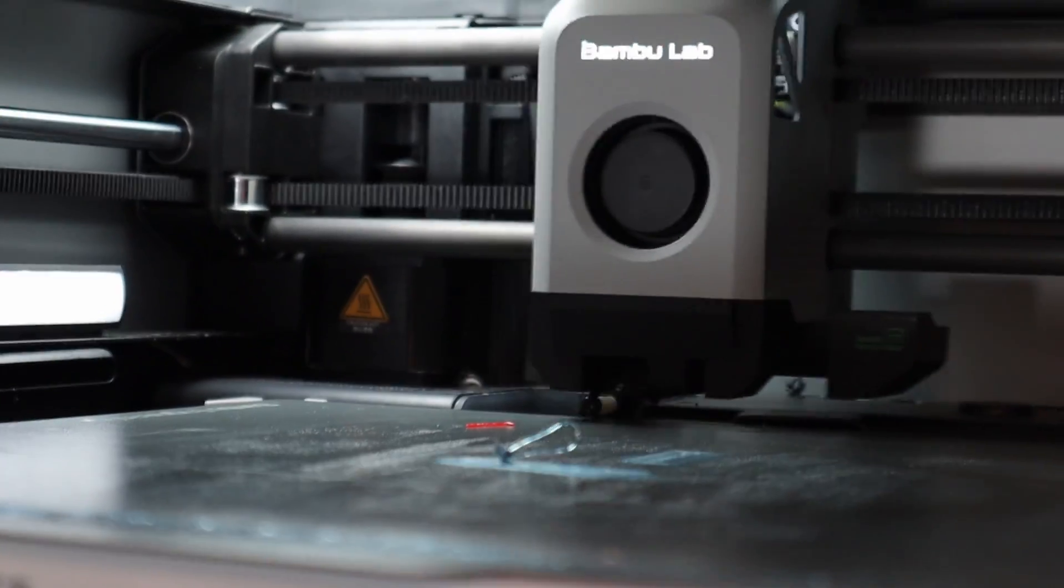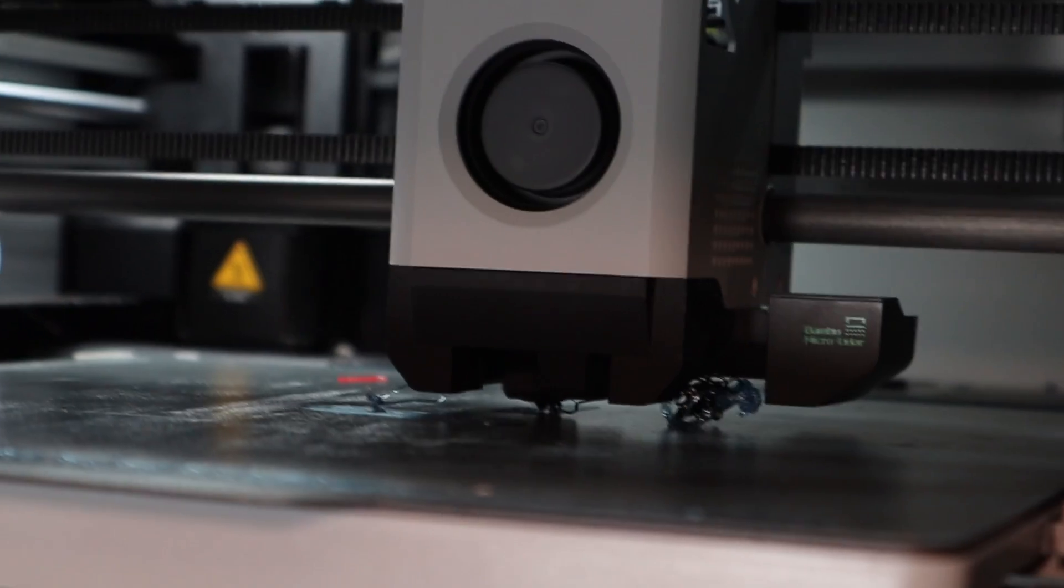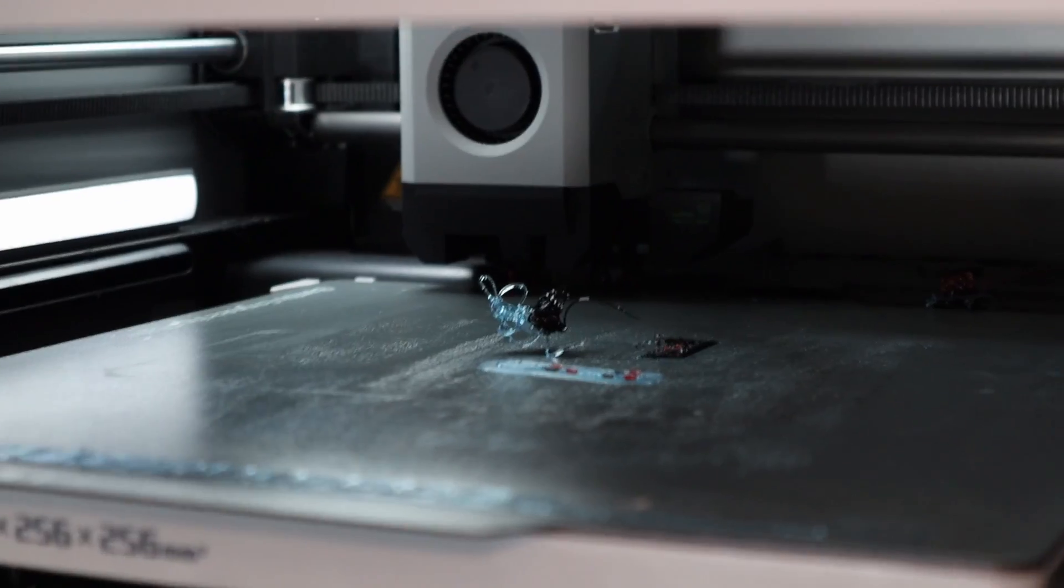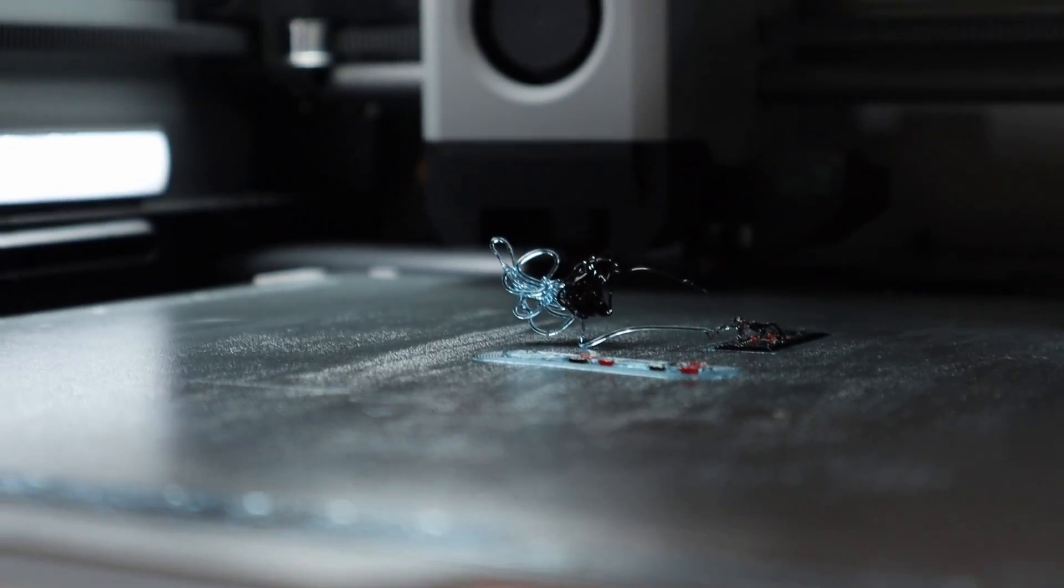Sometimes the nozzle wiper isn't working properly, and then we have filament being pulled into the build chamber. Sometimes it ends up in the bottom, sometimes on the build plate itself, and rarely it will end up in your print as well. If you print with a lot of colors, for example, it can end up right in any layer of your color print.